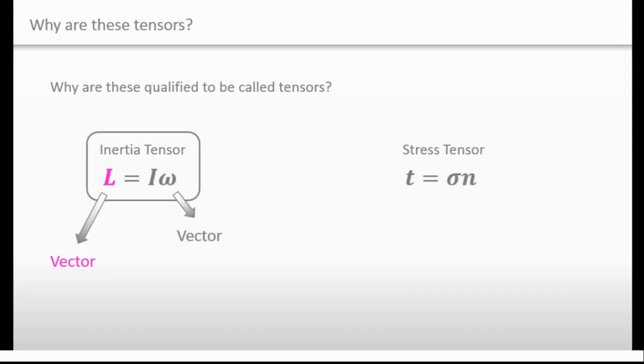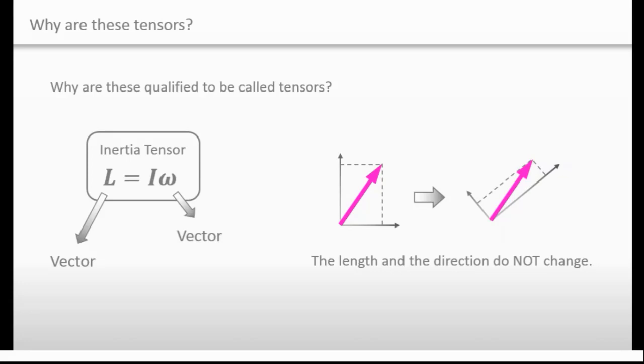Now, let me remind you once again, because it's important. Here is a vector. And if I change the coordinate system, its components will definitely change. But the length and the direction will not change. That is a vector, okay?